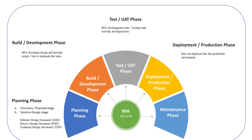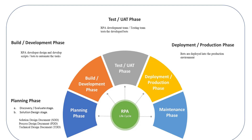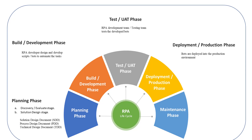The next stage is the Deployment or Production phase. Bots are deployed into the production environment only after they have completed both the development and testing phases. After deployment, users can use the bots to automate their tasks. If there is still a problem with the bots, they are transferred back to the RPA development and testing team, who will analyze and resolve the issues. After resolving the problems, the bots are moved to the final phase: the Maintenance phase. The deployment stage involves the actual implementation of the RPA solution.